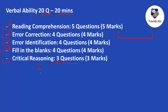In critical reasoning, they will give you a three to four sentence paragraph with four options, and ask questions like which statement strengthens the argument — where the argument is whatever is written in that paragraph — or which statement weakens the argument. We are going to conduct sessions on verbal ability as well, which will give you a more detailed idea.